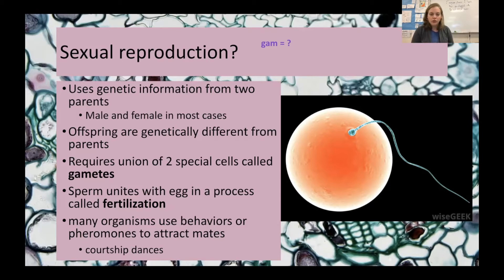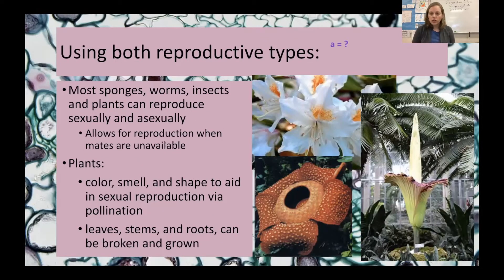Many organisms use behaviors like pheromones to attract mates or courtship dances for sexual reproduction. There are still some species that use both types of reproduction — usually species that represent very primitive lines, like sponges, worms, and simple insects. We also see this in plants; it's fairly common across plant lines but becomes less common in more recently adapted plants like woody flowering plants, though some flowering plants can still reproduce asexually.